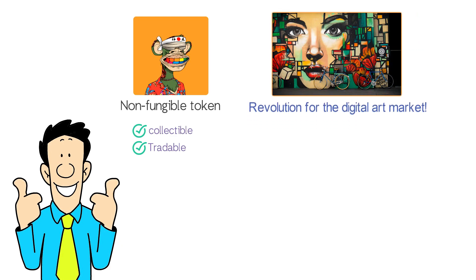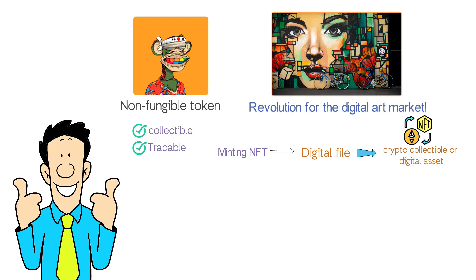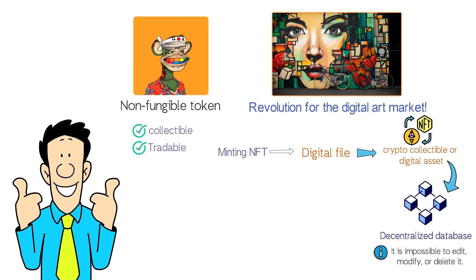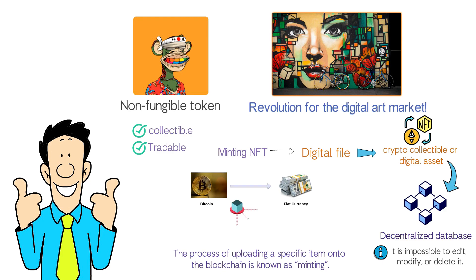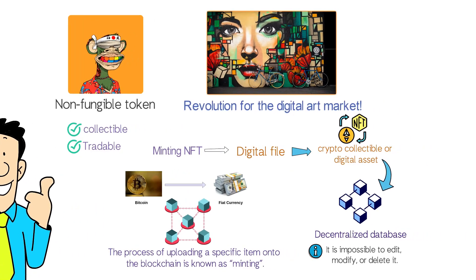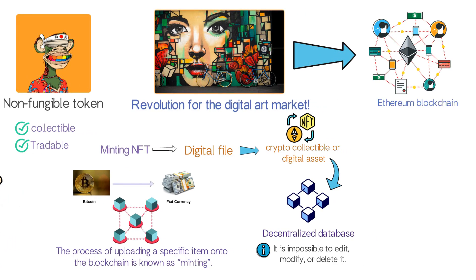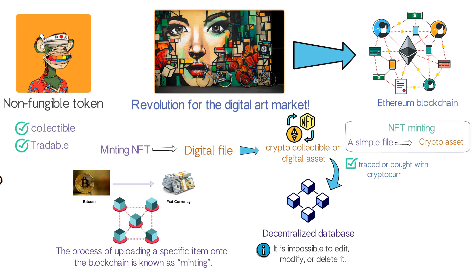Now to the main question: what is NFT minting? In simple terms, minting an NFT refers to the process of turning a digital file into a crypto collectible or digital asset on the Ethereum blockchain. The digital item is stored in a decentralized database or distributed ledger forever, and it is impossible to edit, modify, or delete it. Just as a manufacturer mints a physical coin, the process of uploading a specific item onto the blockchain is known as minting. This process turns a simple file into a crypto asset easily traded or bought with cryptocurrencies on a digital marketplace without an intermediary.